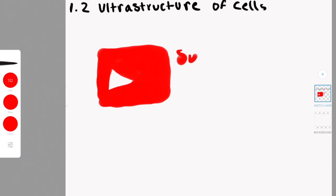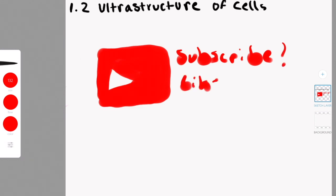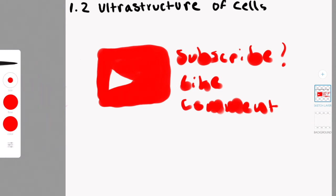Deducing the function of specialized cells. This cell is very interesting — it has a weird surface area. This is called a microvilli. It increases the surface area of cell absorption. Its function is nutrient absorption in the intestine and kidneys.